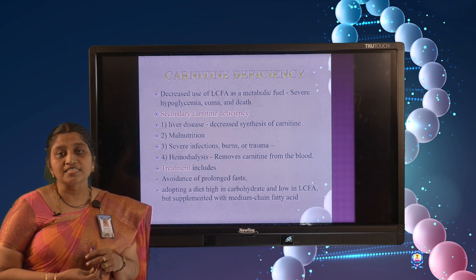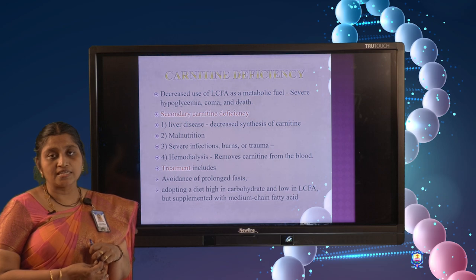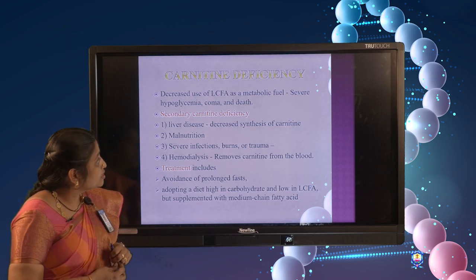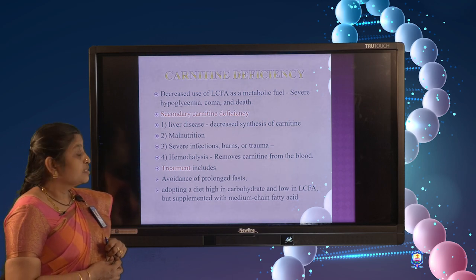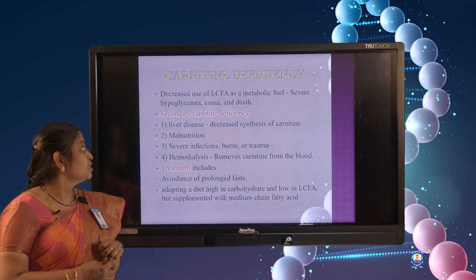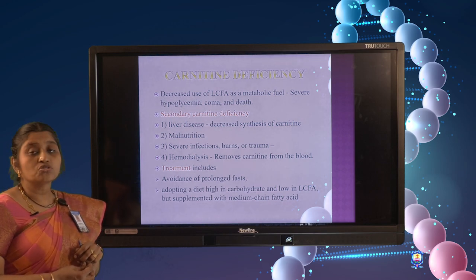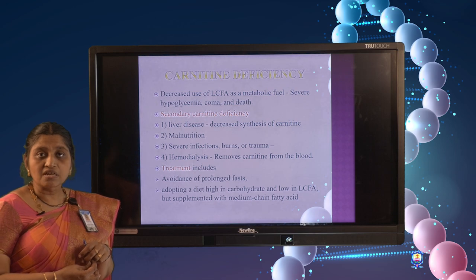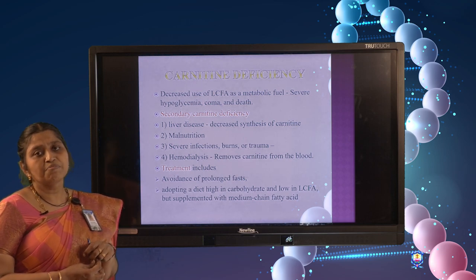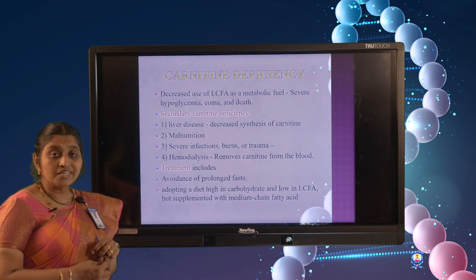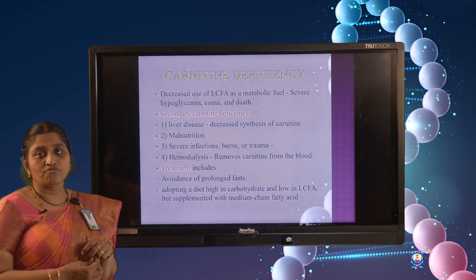If this carnitine transporter is deficient, long chain fatty acids cannot be metabolized, which can result in severe hypoglycemia, even coma, and can sometimes be fatal. Secondary causes of carnitine deficiency include liver diseases, malnutrition, severe infections, burns, trauma, and hemodialysis, during which carnitine can be removed from the blood. Management involves avoiding prolonged fasting and adopting a diet high in carbohydrates and medium chain fatty acids instead of long chain fatty acids.